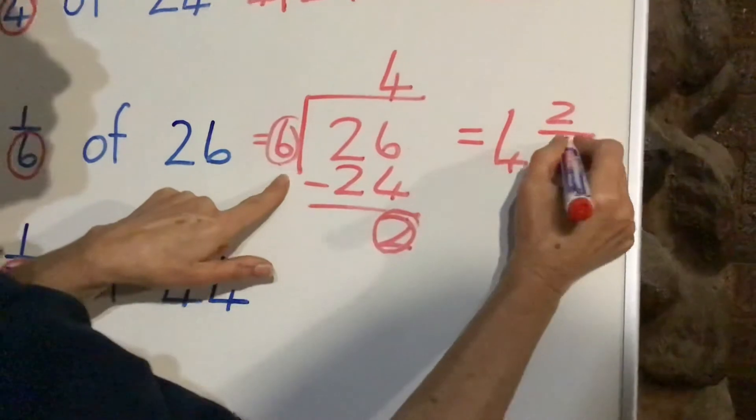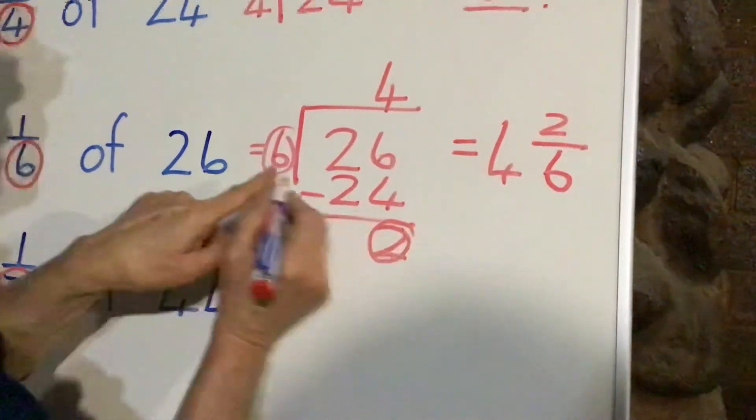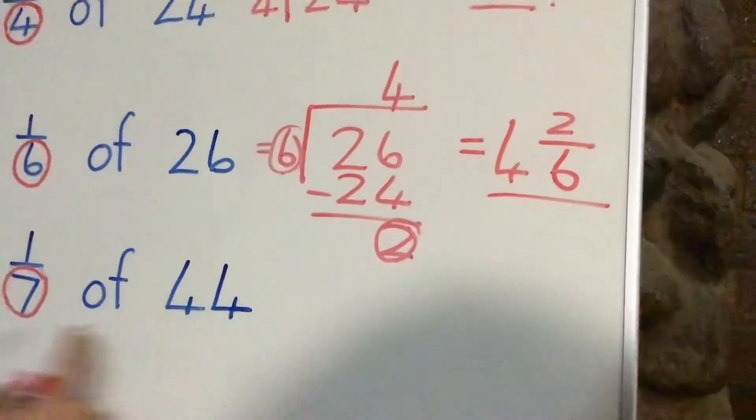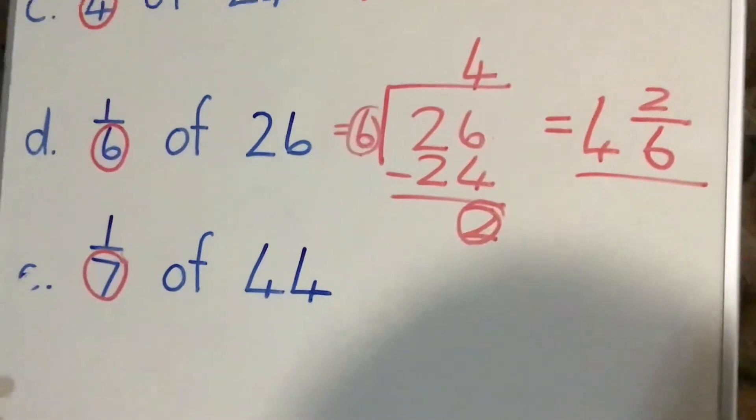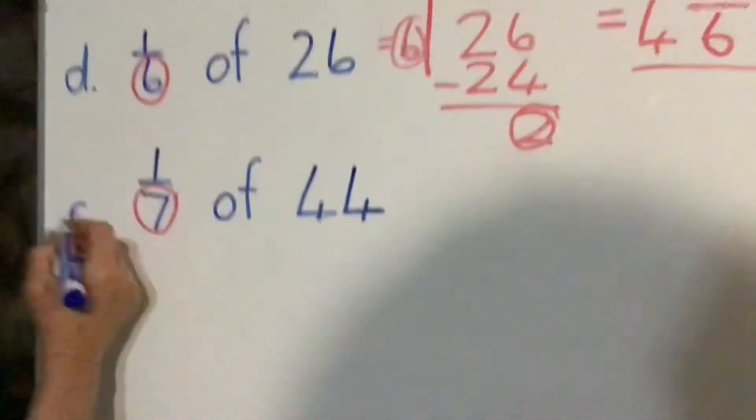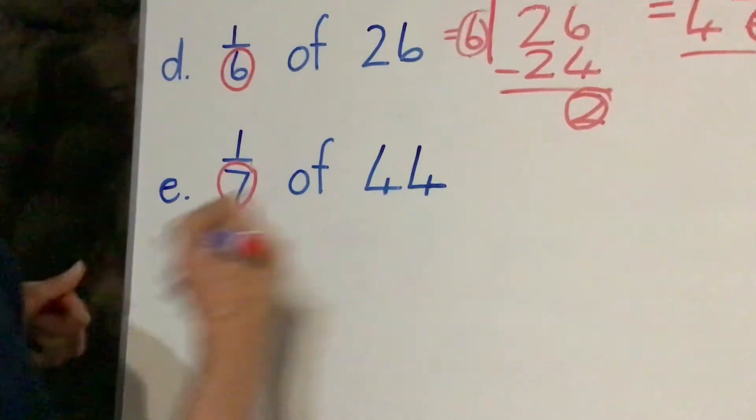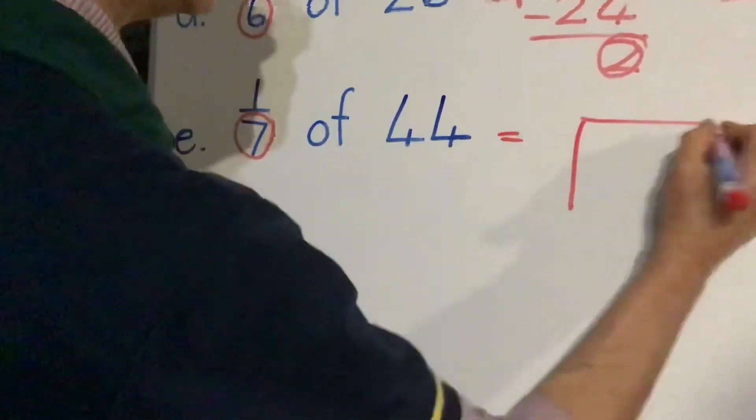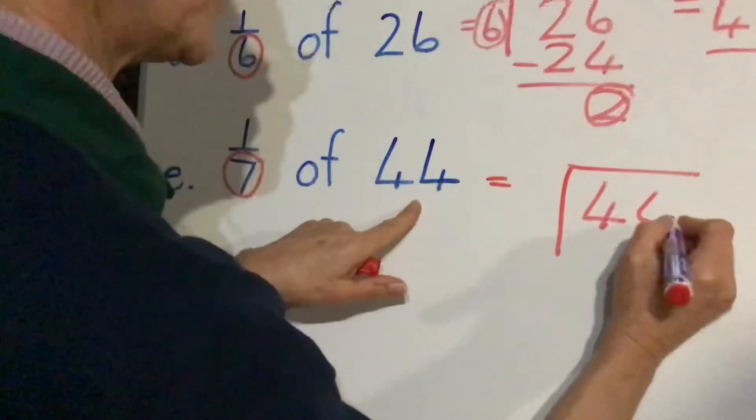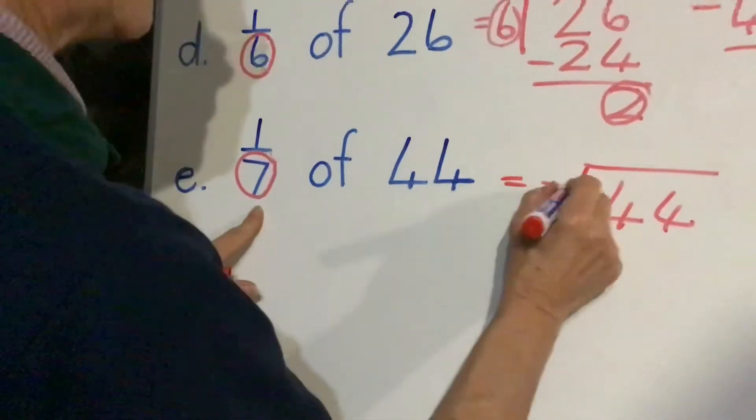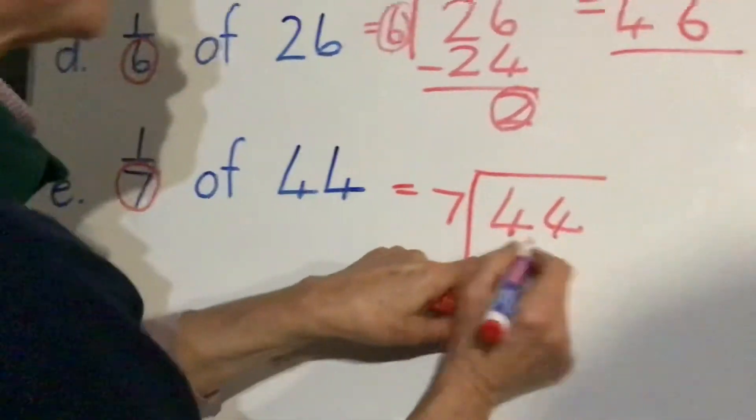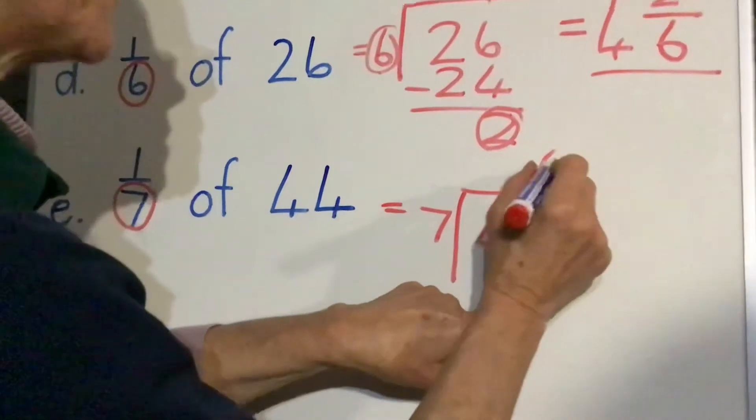The last one here is e. We've got 1 seventh of 44. Let's see how this works out here. So let's put 44 in the box, we're going to share by 7. Seven goes into 42. We know according to our table, 6 times 7 is 42.